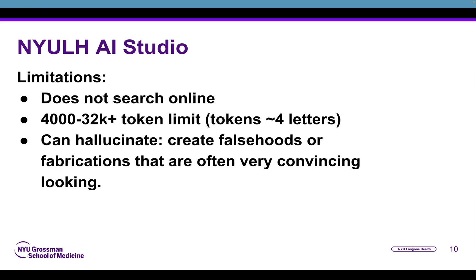There are some limitations. The NYU Langone Health AI Studio does not search online for information. There are what are called token limits — a token is about four letters, one syllable, or one short word — and depending on the model you use, the token limit is between 4,000 and 32,000. Also, AI can always create what are called hallucinations, which are falsehoods or fabrications that can look pretty convincing. So whenever we work with any AI tool, we want to critically evaluate what we're seeing in the output.